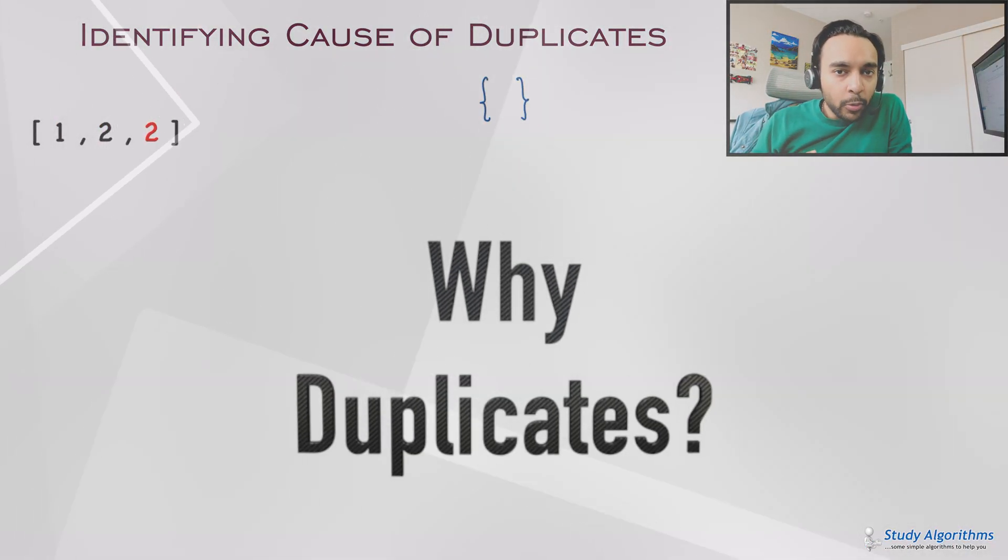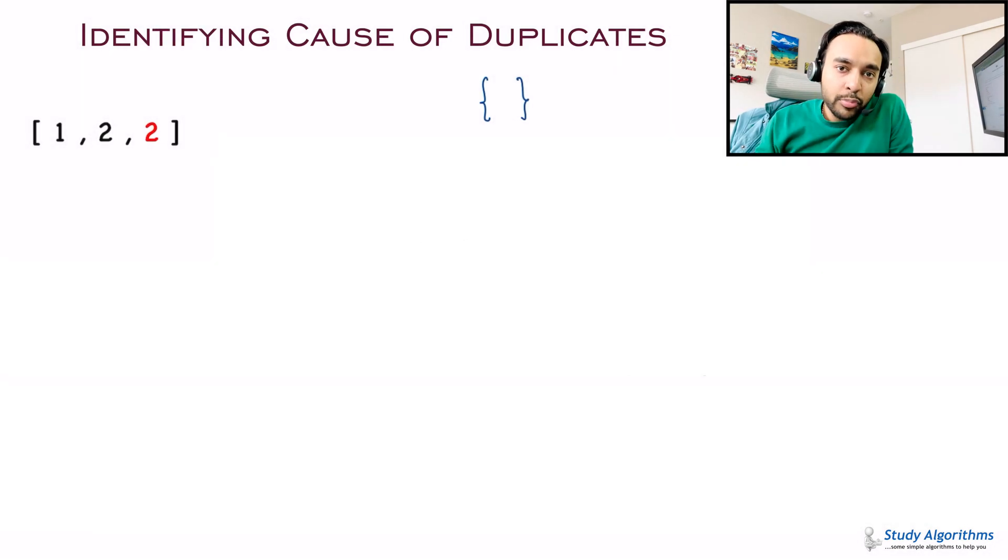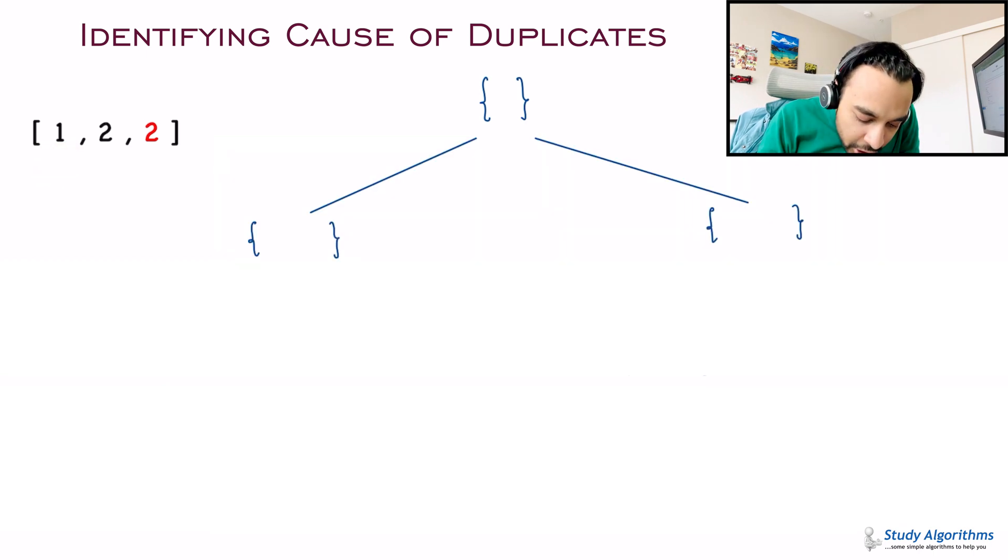To understand where are the duplicates coming from, let us try to attack this problem in the same way that we approached the original problem subsets. Once again, if you have not solved that problem first, do check that out first. So, right now I have this array with me. Right? And to just see the difference, I am highlighting the second number 2 in a different color. Right? So, you will know how duplicates are being created. Right? So, how do we attack the problem?